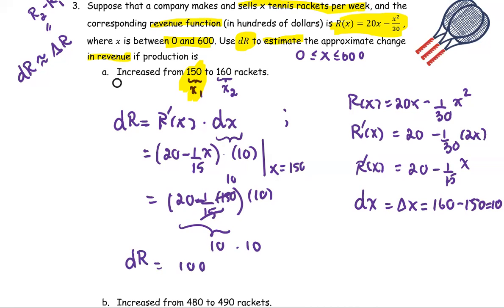So the differential revenue is 100. The unit is hundreds of dollars, or we can say 100 times 100 or $10,000 change in revenue. This is the approximate of the delta R.